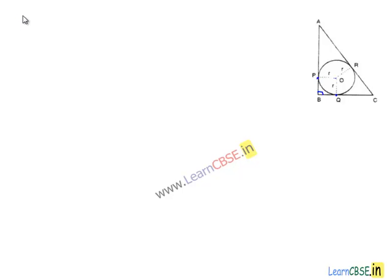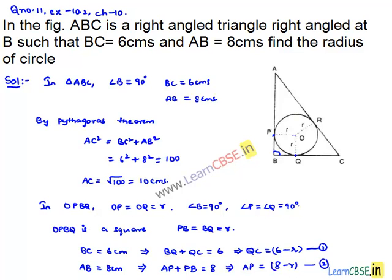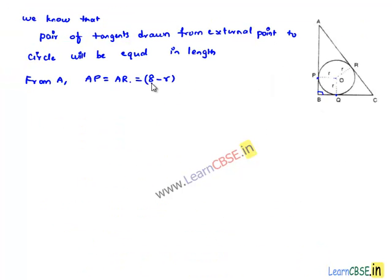Now, we know that pair of tangents drawn from external point to the circle will be equal in length. So, now consider from point A: the tangents AP and AR are equal. So, AP will be equal to AR, which is 8 minus R. And from point C, CQ will be equal to CR, which we got the value of QC as 6 minus R.